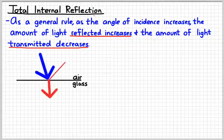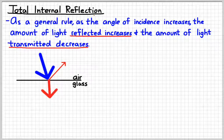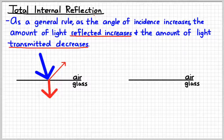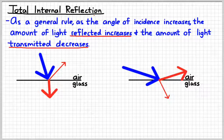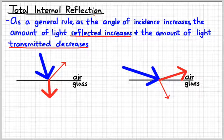So to kind of illustrate that, here's an air glass interface. The big bold blue arrow represents a lot of light. At a shallow angle like this one, most of the light is transmitted. Hence the big thick red arrow. But if we increase the angle of incidence, we're going to increase the amount of reflection and decrease the amount of transmission.